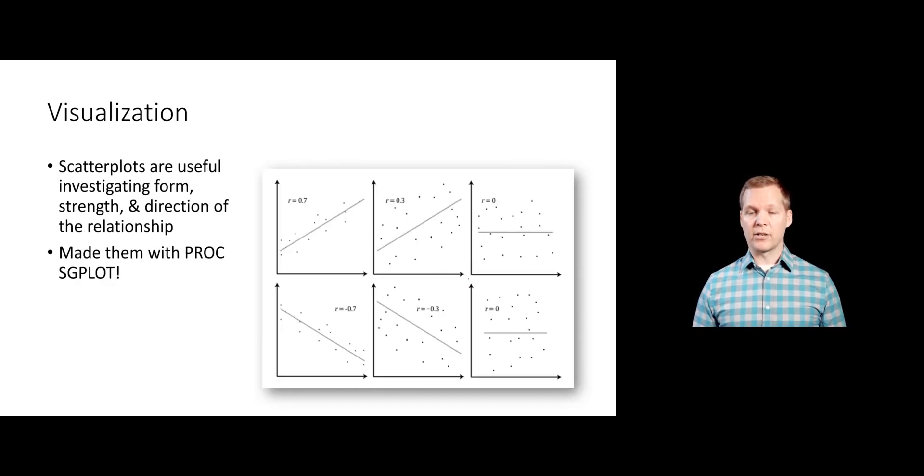We've already looked at scatter plots as a great way to look at the relationship between two variables. Then we looked at sample correlation as a way to quantify that linear relationship. We made these plots with PROC SGPLOT, but we can also make them with PROC CORR. For this analysis, we're going to stick strictly in PROC CORR.